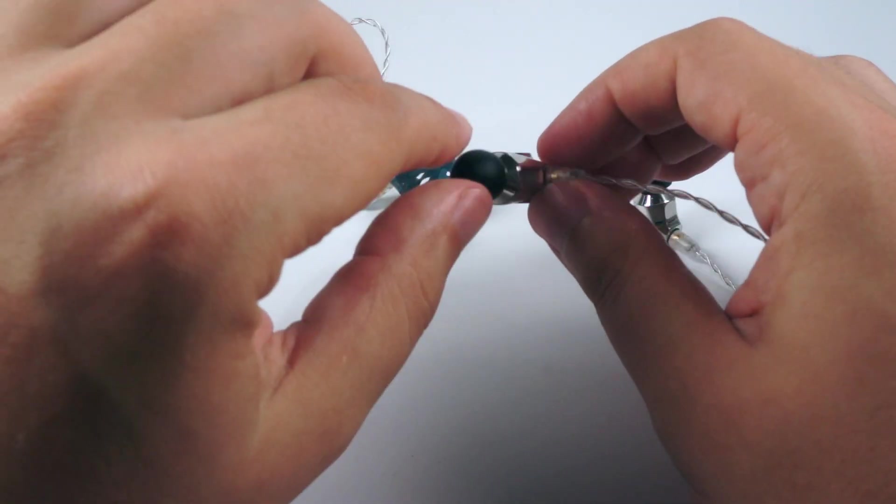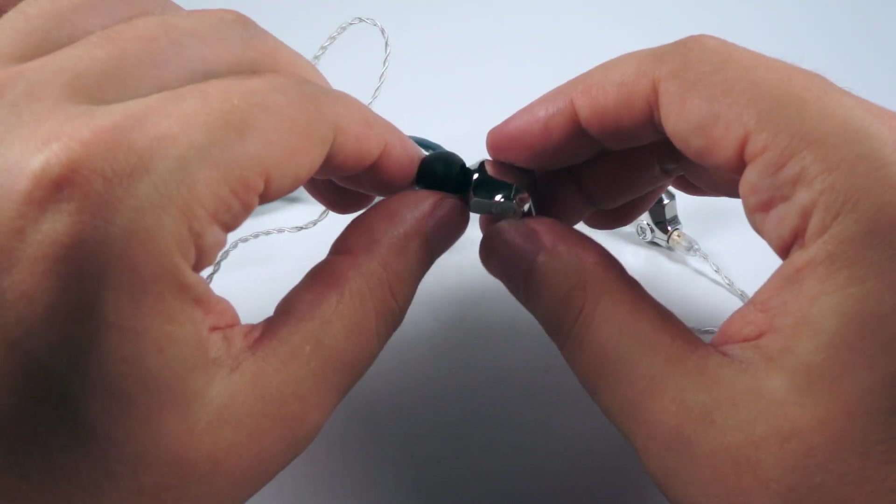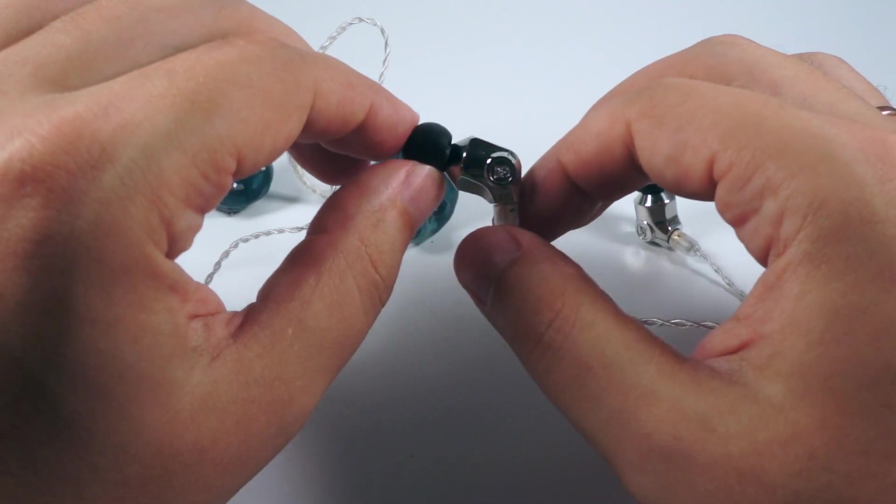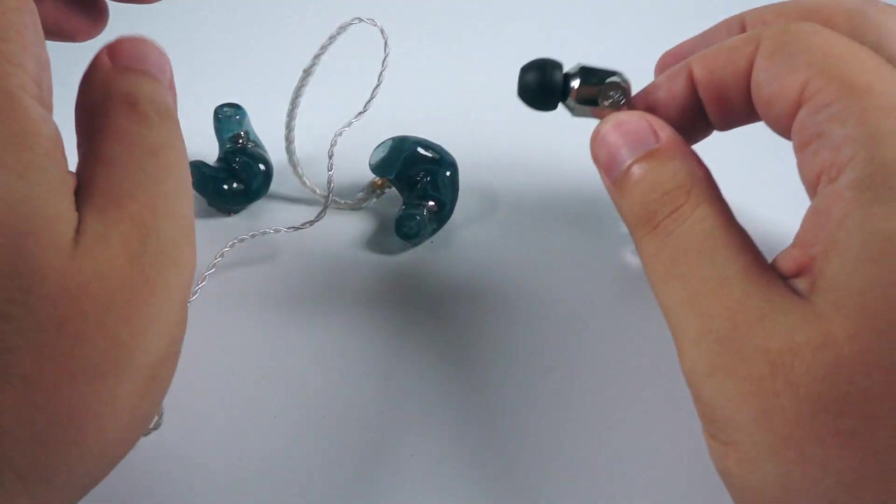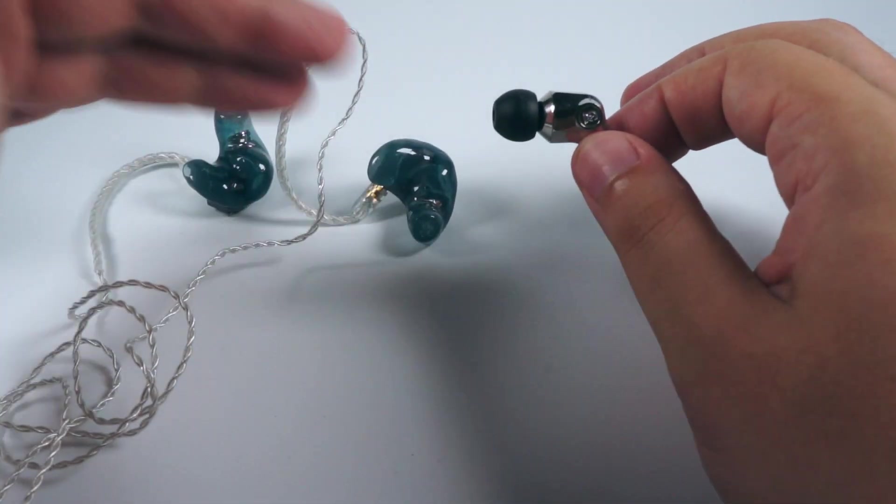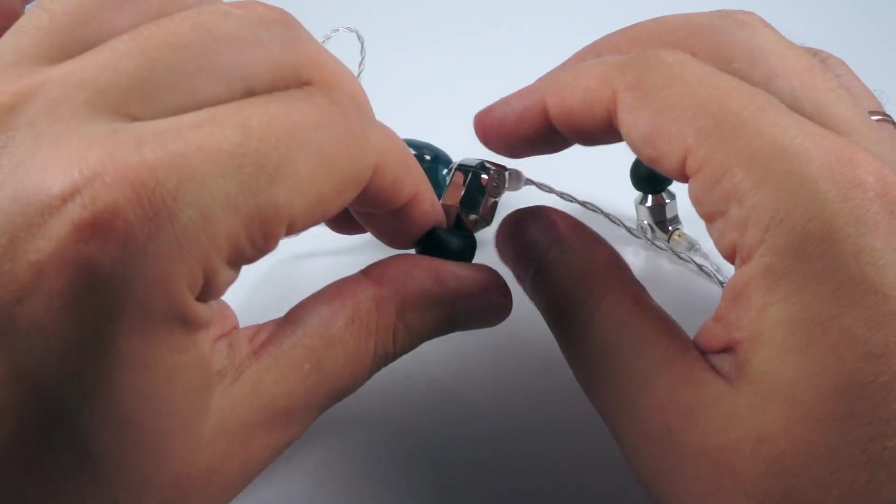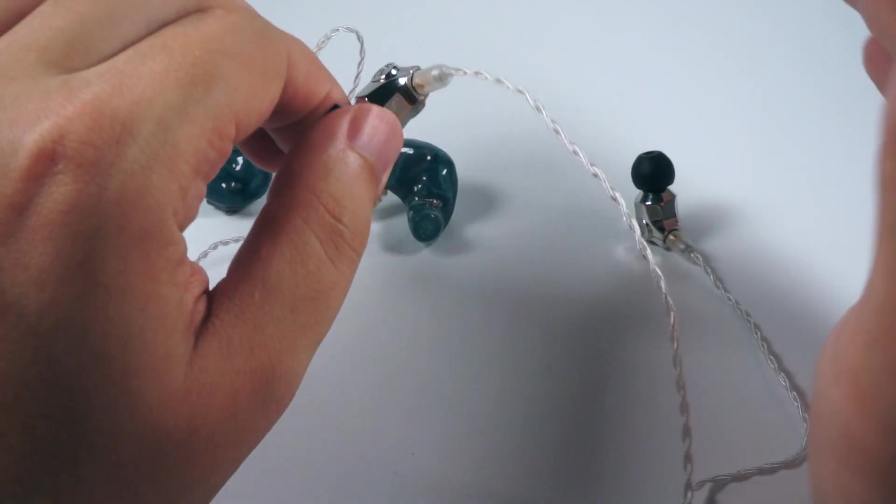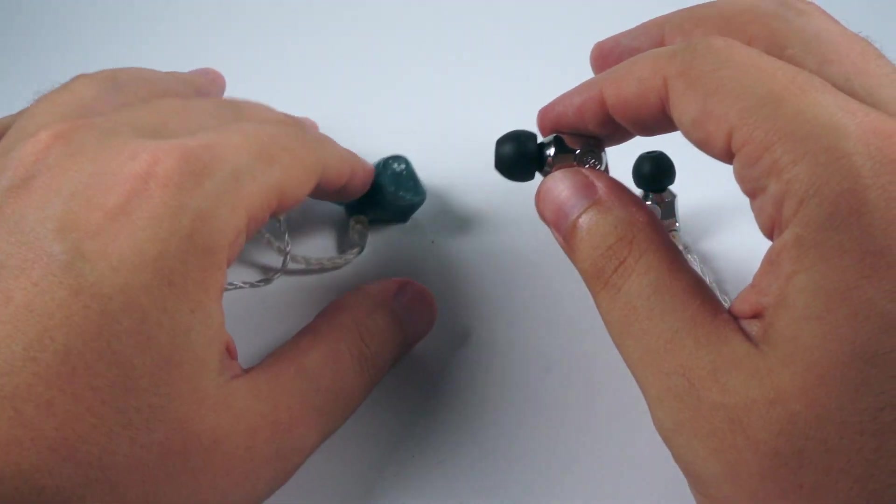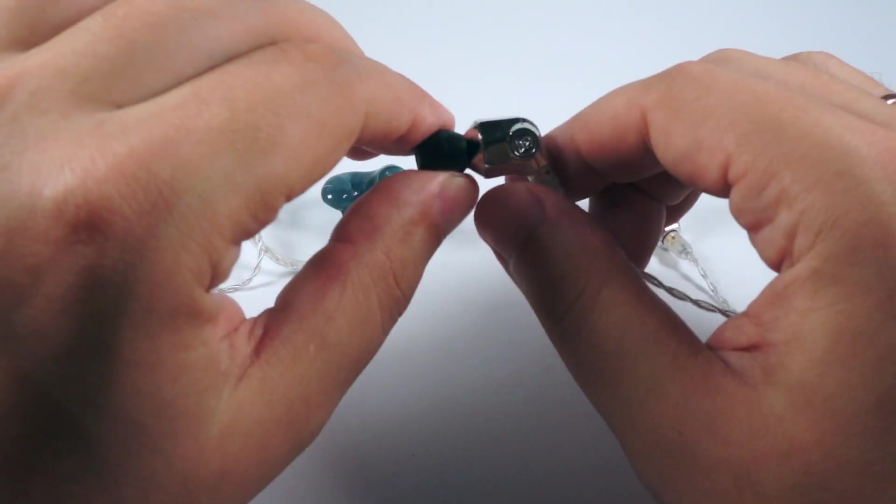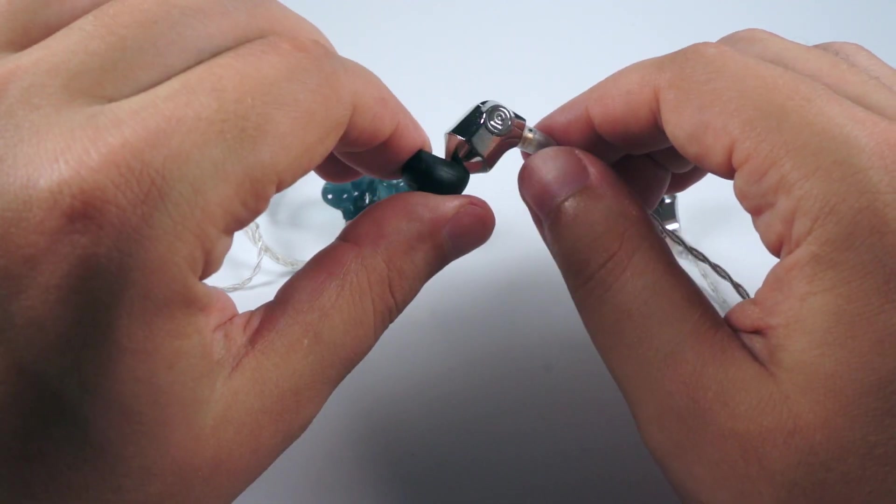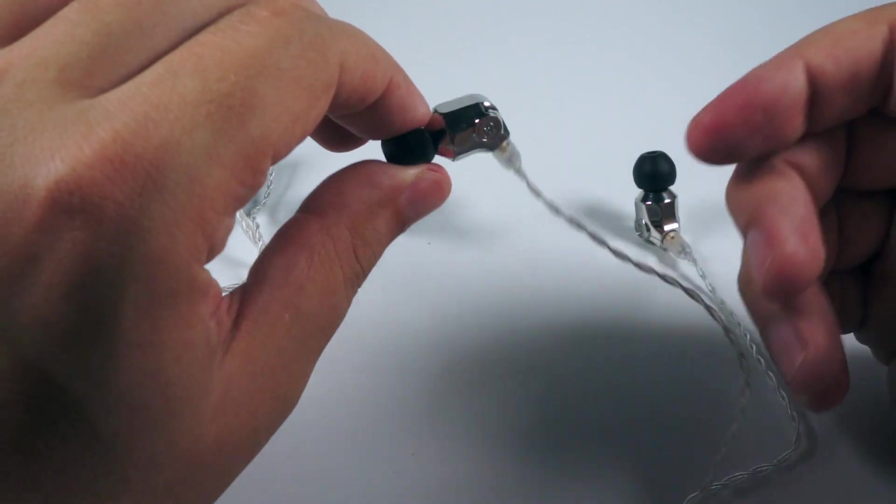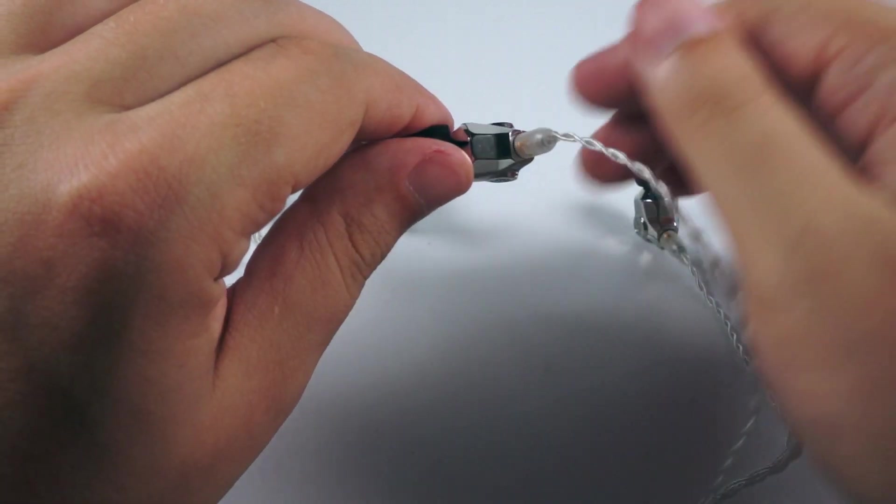And Atlas is the dynamic driver flagship. It offers much more weighty and much more present lower frequencies and they really go super deep. Actually they are deeper than Andromedas and they are a bit slower, but actually they are not slow. They are pretty good in terms of speed but they are slower than Andromedas' armature lower frequencies. So they are a bit slower but they are more weighty and they are giving more punch, more energy in lower frequencies.